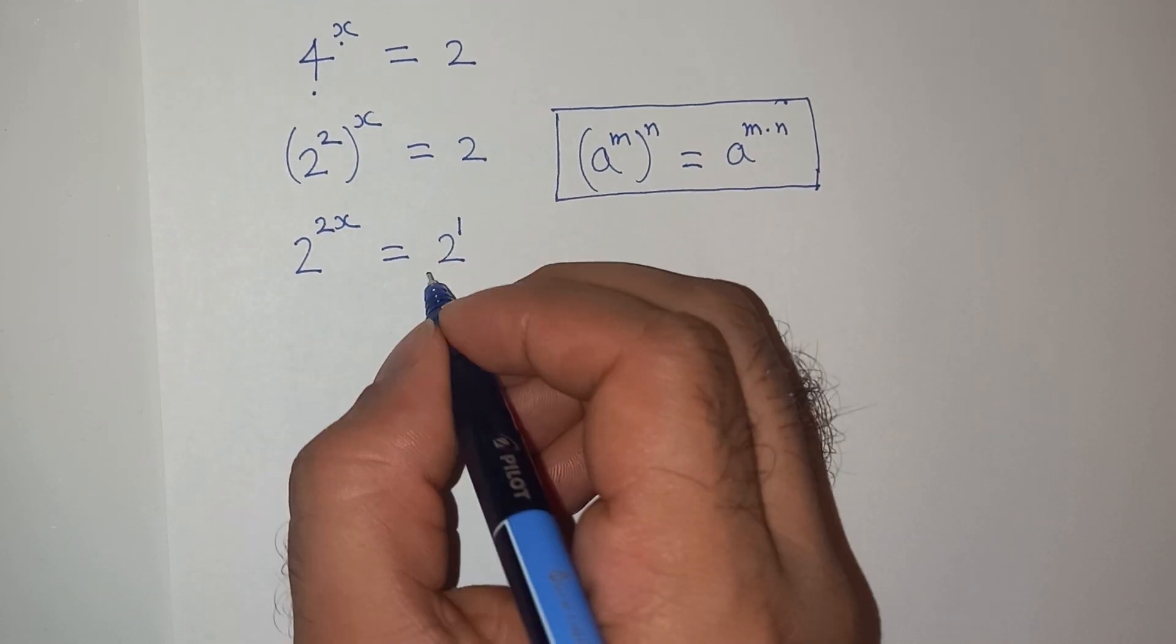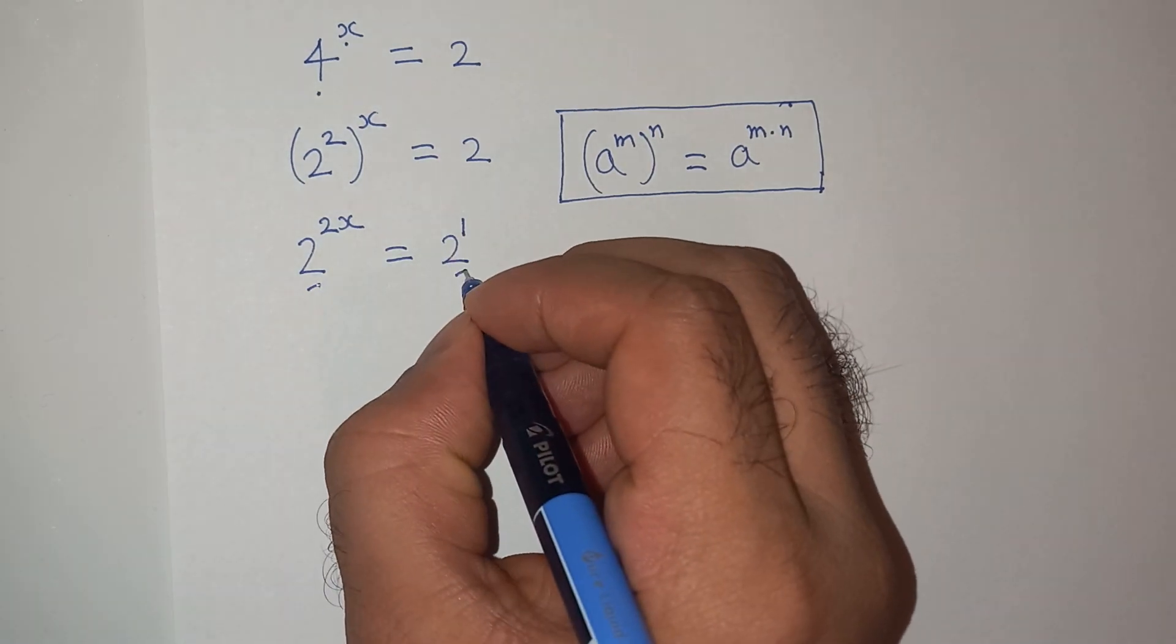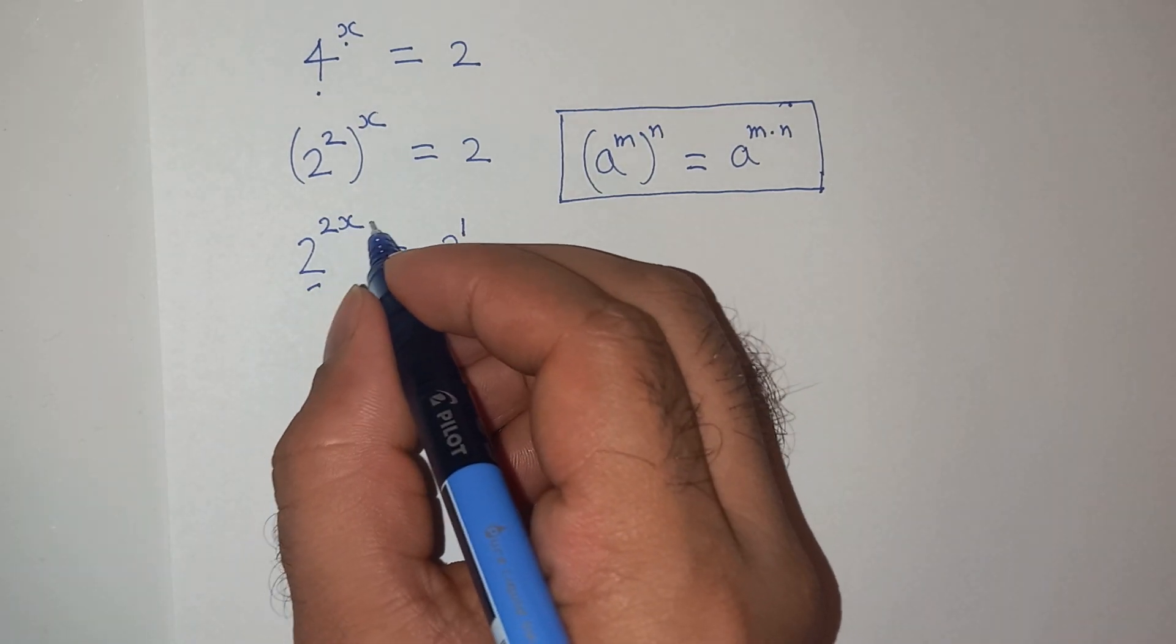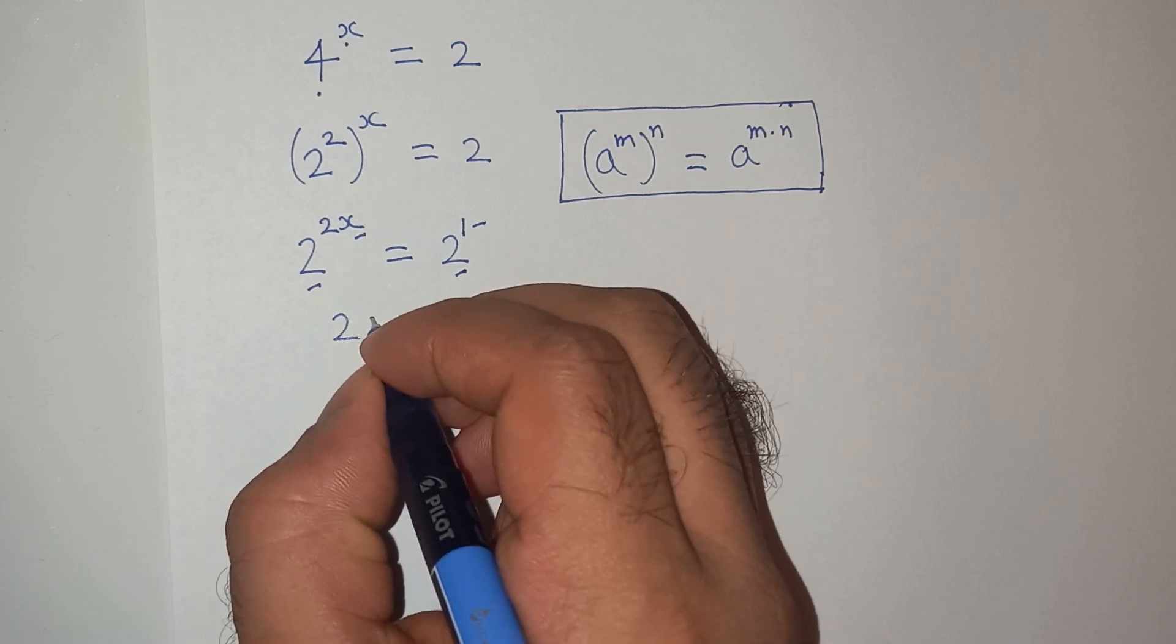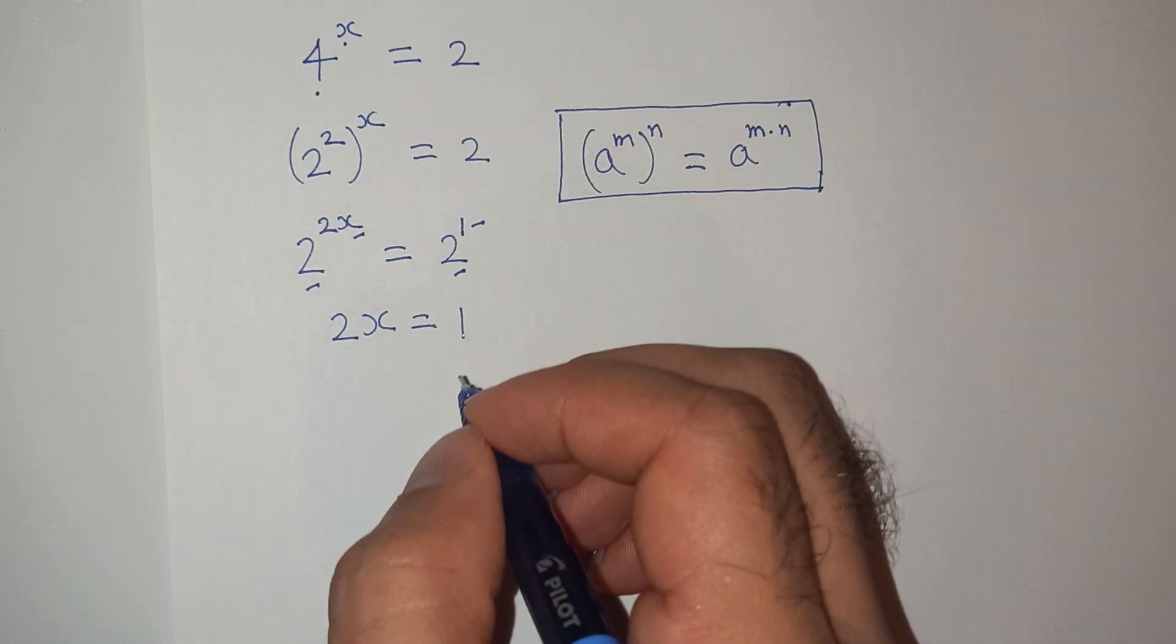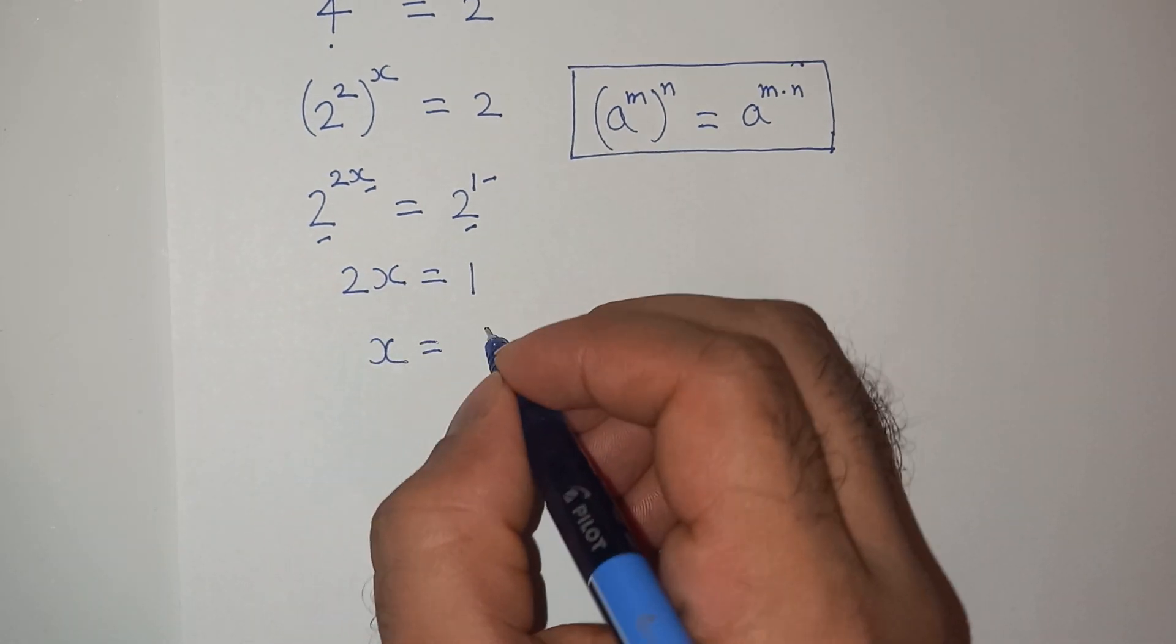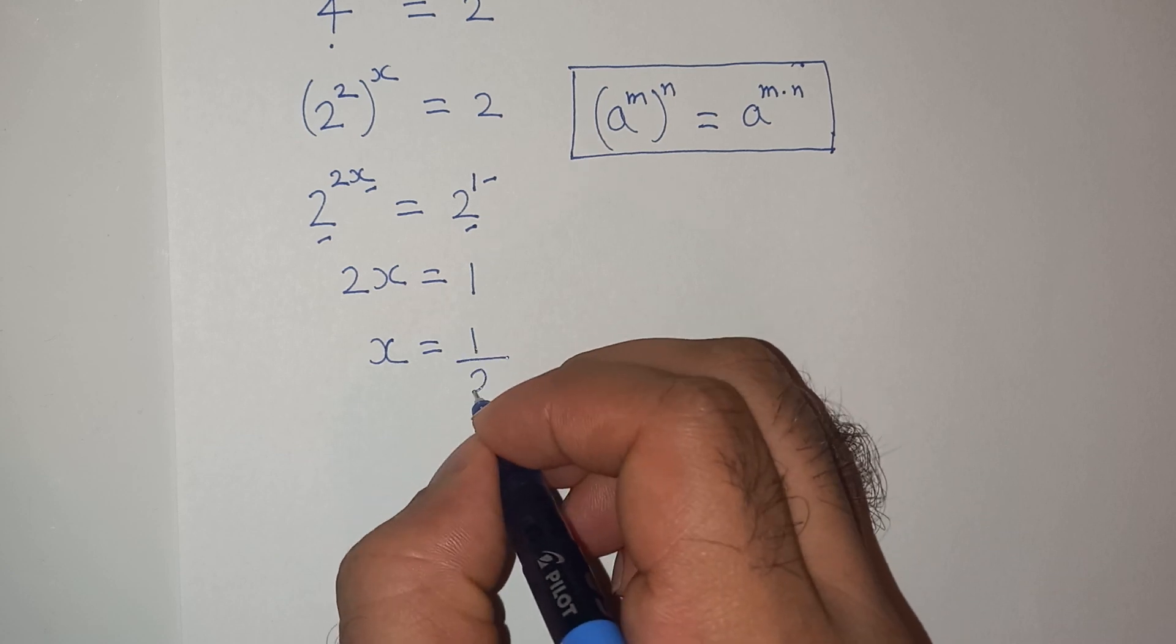We can compare the left hand side and the right hand side. The base 2 is same, so we can say that the exponent should also be same. We will compare 2x equals to 1. So, finally, the value of x is 1 divided by 2.